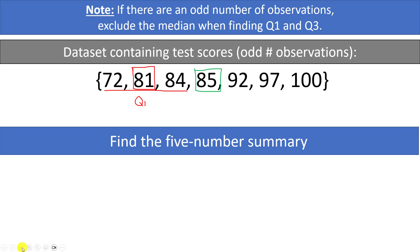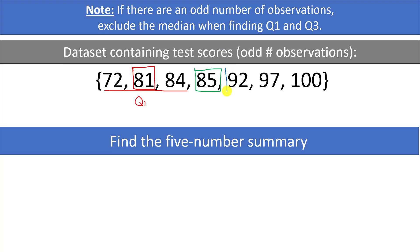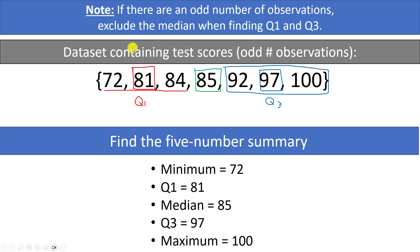The top half of the distribution — not including 85 — contains 92, 97, and 100. The median of the top half is our Q3, which is 97. So altogether, the five-number summary is: minimum = 72, Q1 = 81, median = 85, Q3 = 97, and maximum = 100.